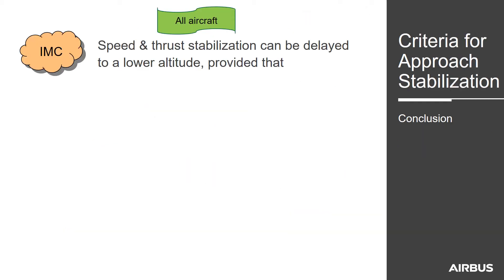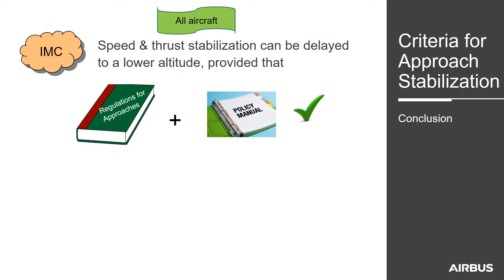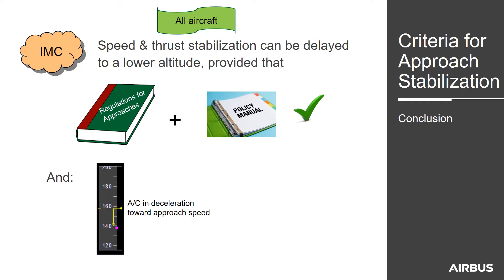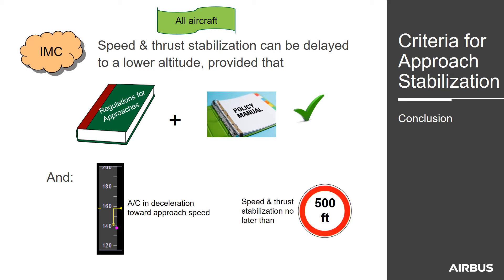So for all aircraft now in IMC, speed and thrust stabilisation can be delayed to a lower altitude, provided it is in accordance with regulation, the airline policy manual, and that the aircraft is in deceleration towards the approach speed. Speed and thrust stabilisation must be achieved not later than 500 feet.